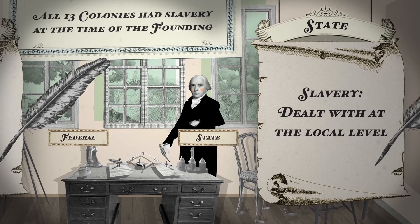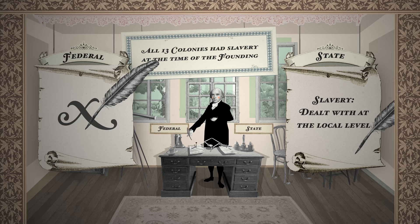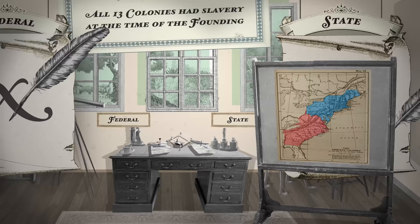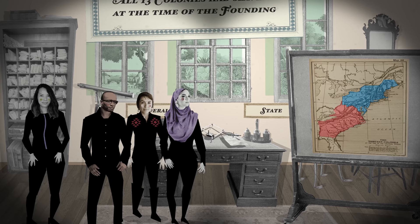One thing we don't factor into current debates about slavery in the founding period is that slavery was not a national institution per se — it was a state institution. Each state dealt with it differently. The Northern states, the free states, in no way wanted to enter into a compact that affirmatively endorsed slavery, which is the reason why the Constitution is very carefully worded — to avoid, first of all, the use of the word slave or slavery at all, which would have had the effect of endorsing slavery.